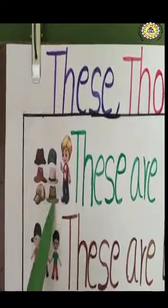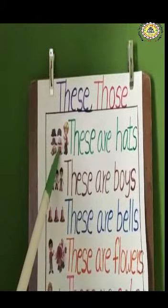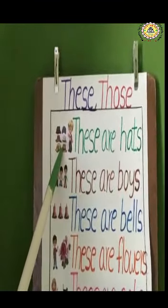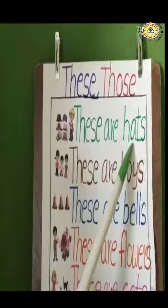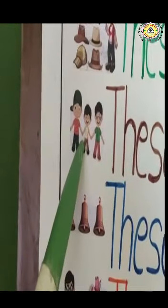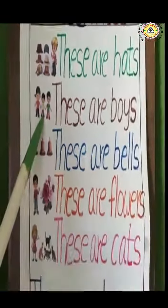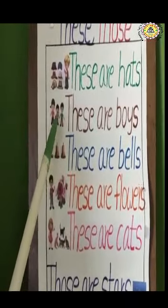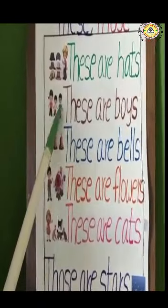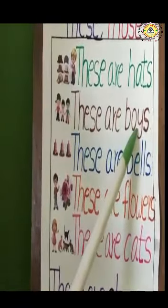Let us see some more examples, children. Look at this picture — these are hats. Why are we calling it 'these'? Because all these hats are near to this boy. So we have to call it: these are hats. Next example — look at this picture. One, two, three — three boys are there. So here also, what do we have to use? These. These are boys, because all these boys are near.